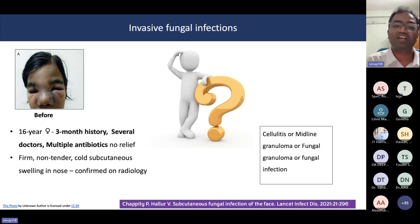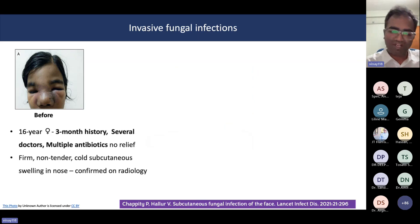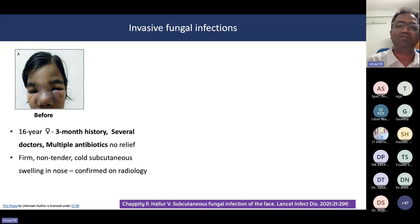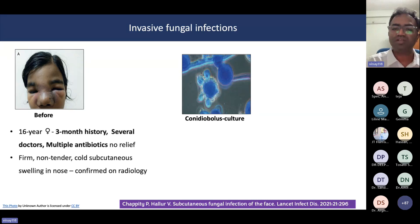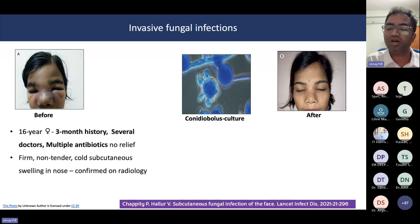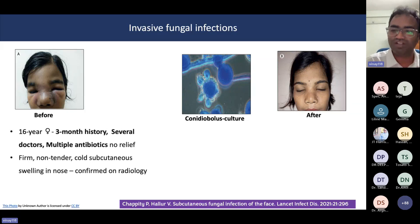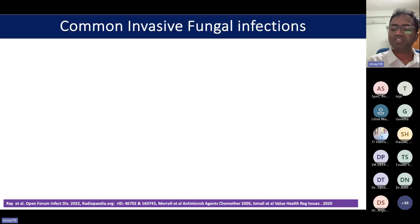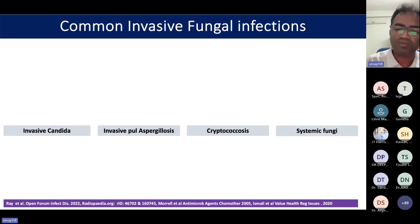This girl was troubled by this disfiguring lesion and had received multiple antibiotics. On presentation, we were confused whether it was a fungal infection, pyogenic infection, or malignancy. We did a fungal culture and obtained Conidiobulus. We started her on saturated solution of potassium iodide and itraconazole, and this was how she looked after three to six months of therapy — a pretty uncommon infection in India and other tropical countries.